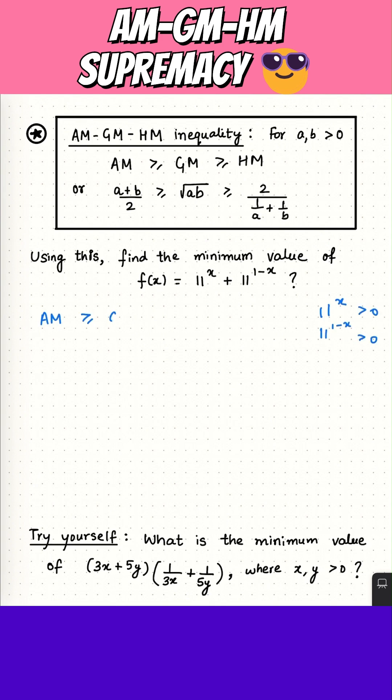AM is greater than or equal to GM with these two terms, 11 to the power X and 11 to the power 1 minus X. So what is arithmetic mean? It is 11 to the power X plus 11 to the power 1 minus X divided by 2, and it is greater than or equal to square root of 11 to the power X into 11 to the power 1 minus X.